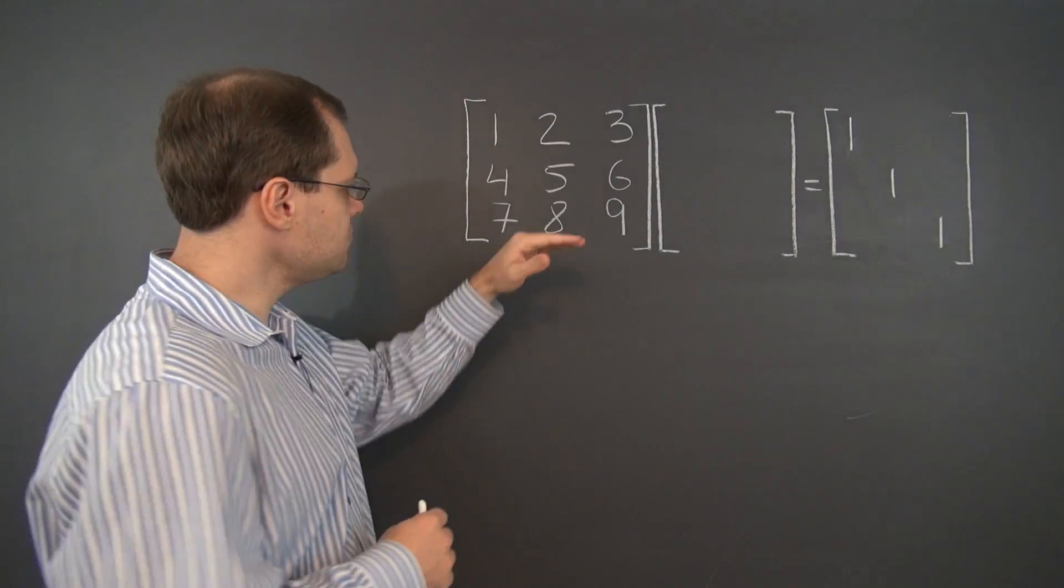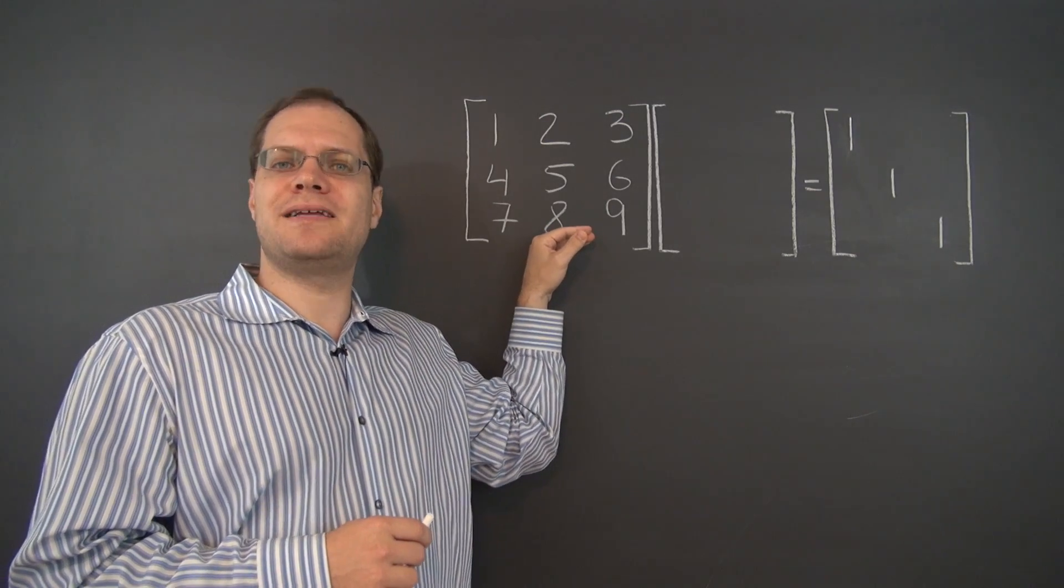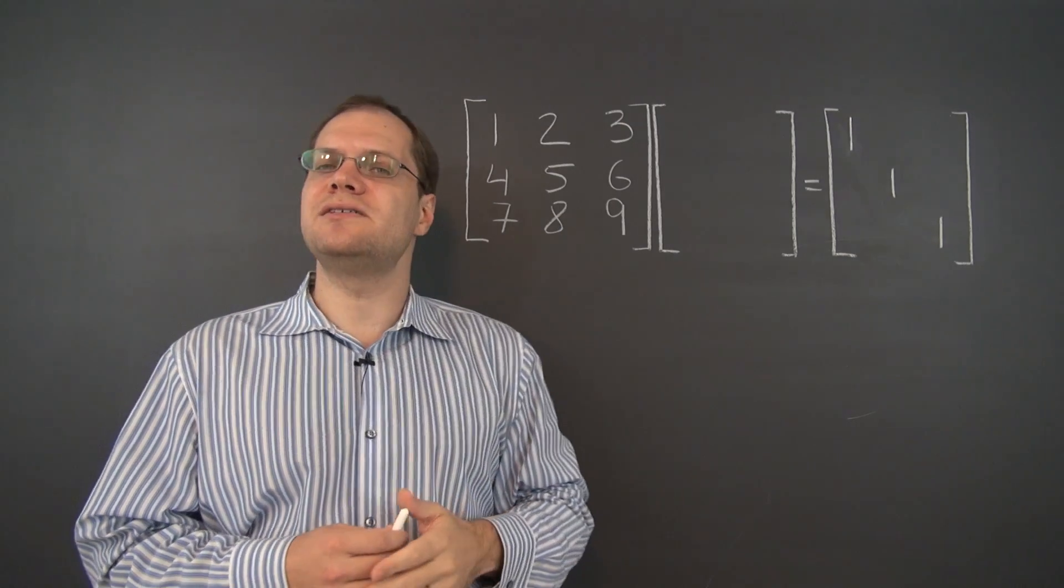Here is my explanation. The key is that these columns are linearly dependent. The middle column is the average of the other two, so the null space is non-trivial.